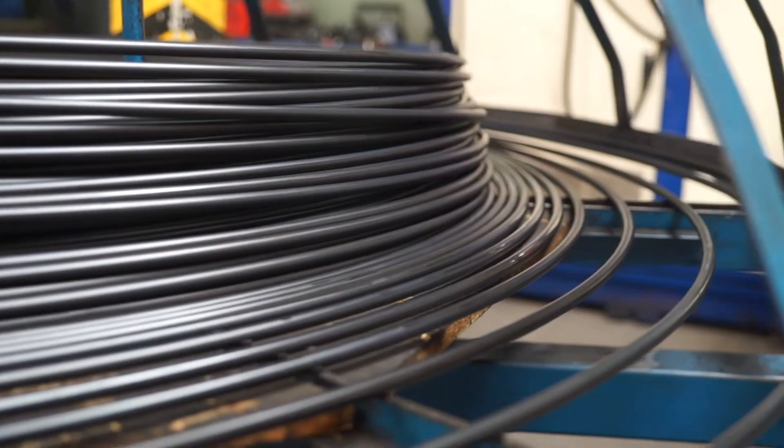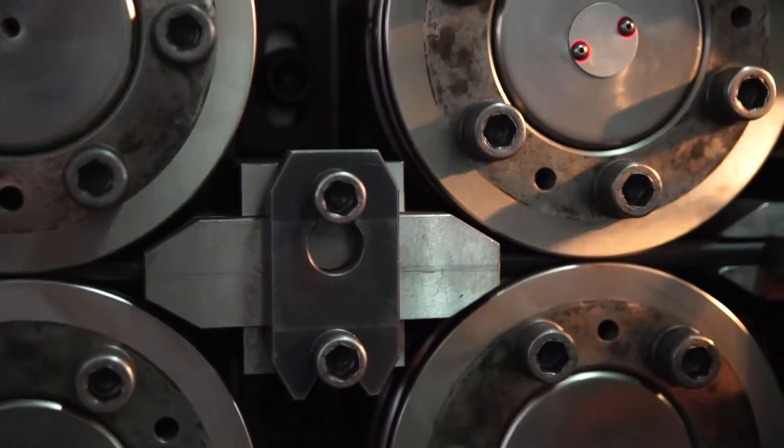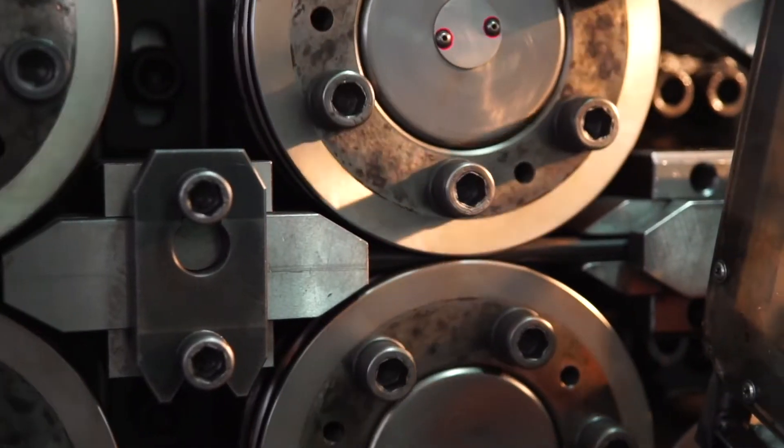The wire is straightened after it is reeled out. The forming rollers then shape the spring.